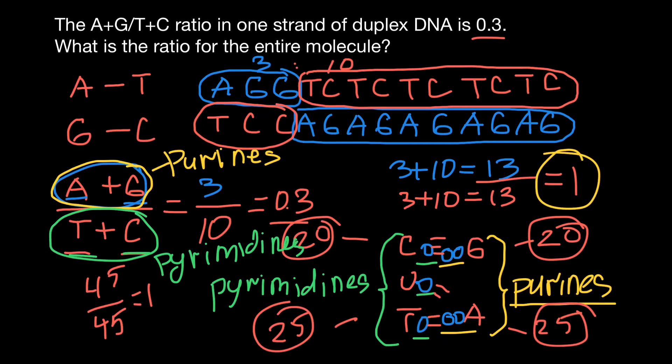Let me repeat the postulates of Chargaff's rule. The first postulate: in double-stranded DNA, the number of adenines equals the number of thymines, and the number of guanines equals the number of cytosines, because these bases form pairs. The second postulate: in double-stranded DNA, the number of purines always equals the number of pyrimidines. That is all for today. Thank you for your attention. Please subscribe for my new videos that I post almost every day, and see you in the next video. Goodbye.